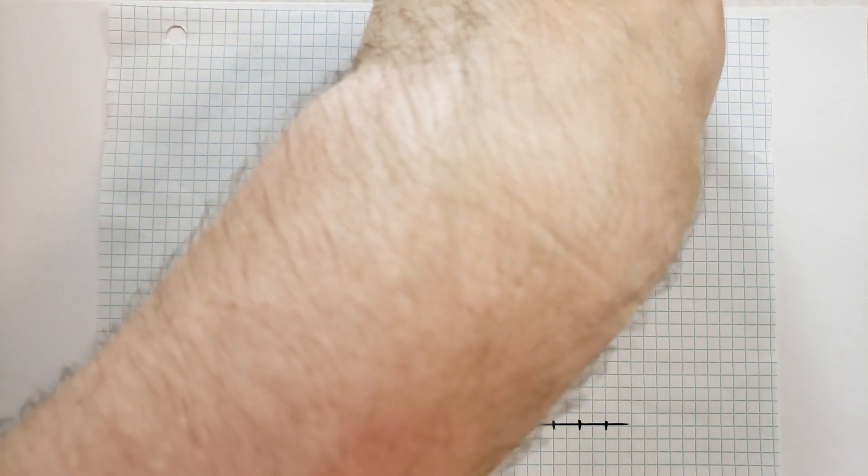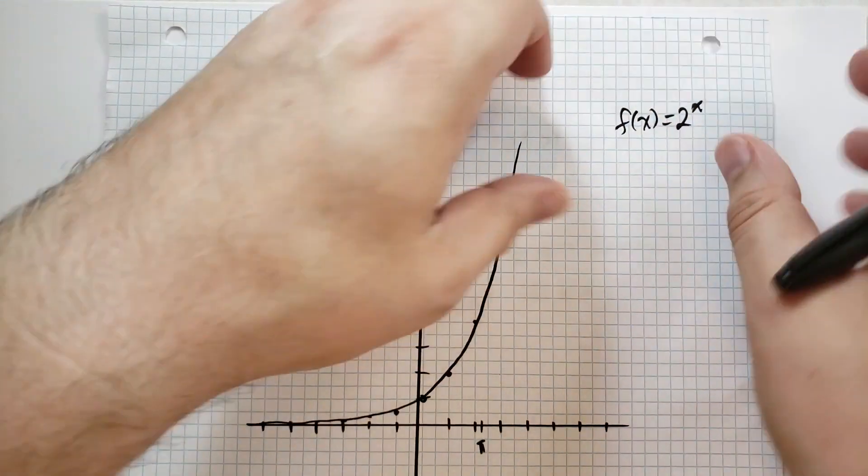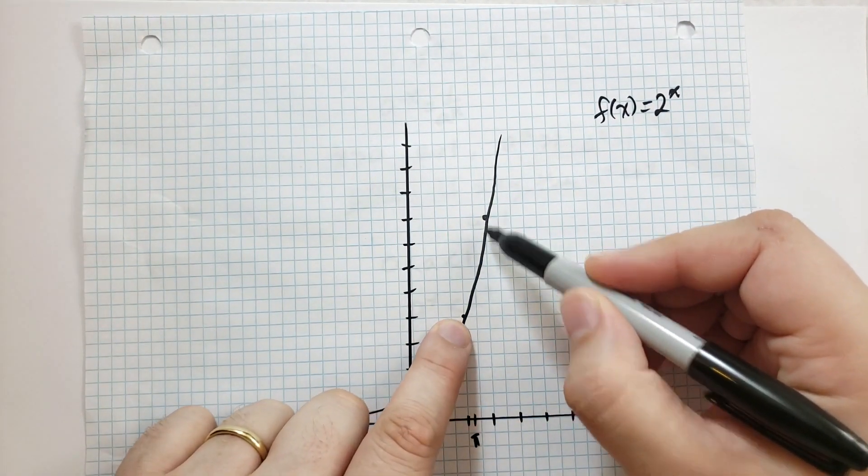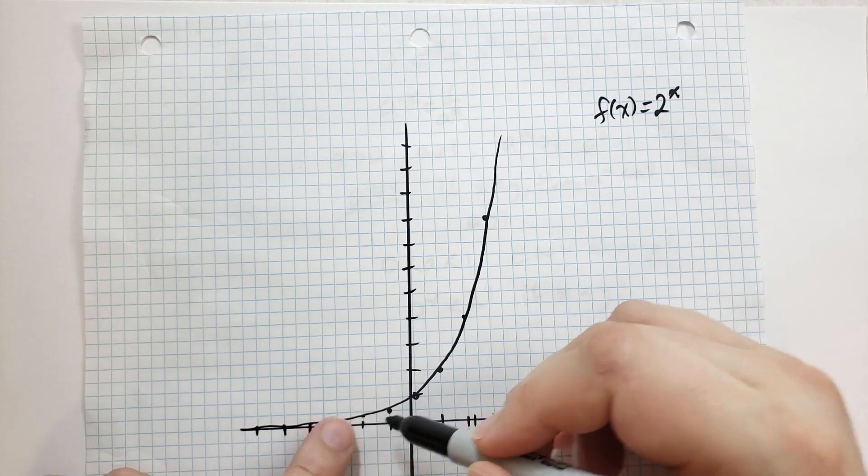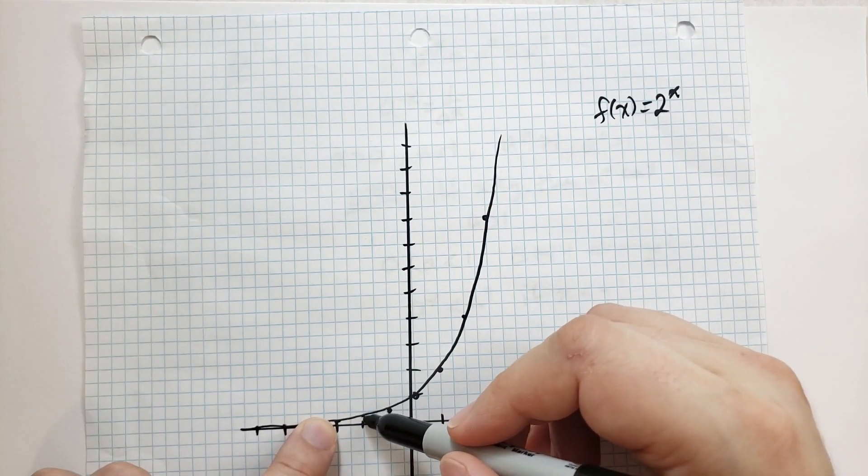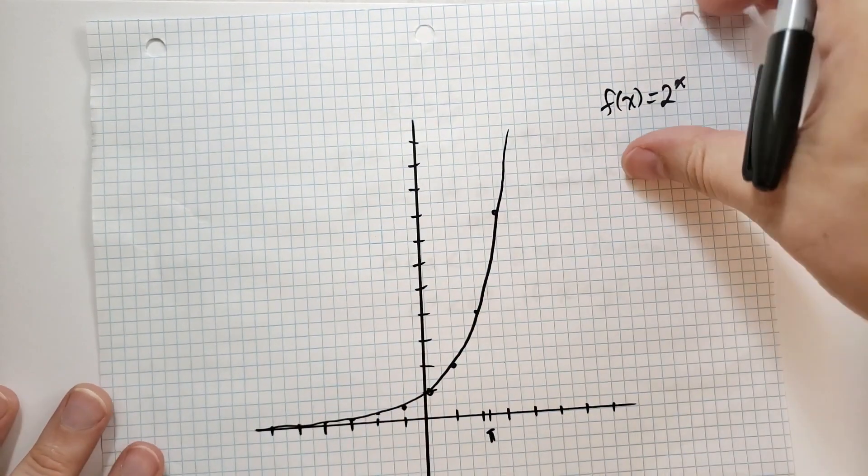Another interesting thing about this graph is that for each step it doubles, because the base is 2. So we go from 1 half to 1 here. We go from 1 quarter or 1 eighth to 1 quarter and so on and so forth.